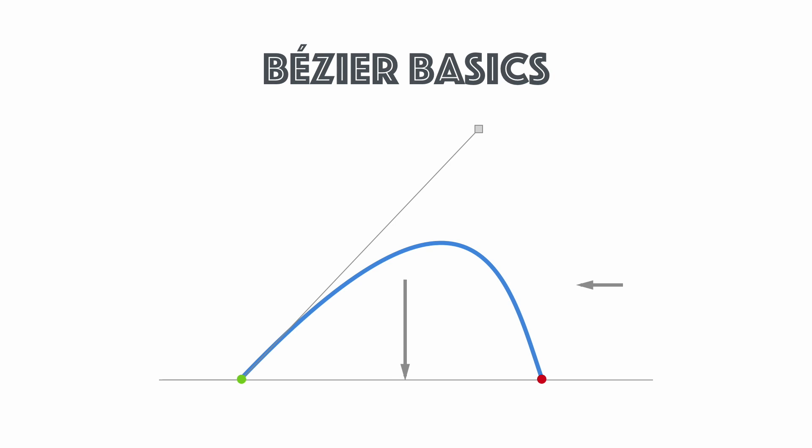What about the end part? In our graphics drawing program we don't have gravity or air resistance. So we'll change those two vectors into another control point. With these two control points, we can perfectly and uniquely describe this path.